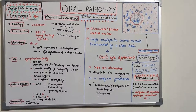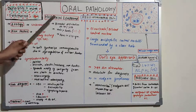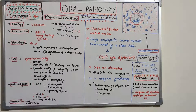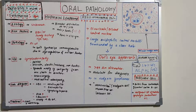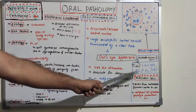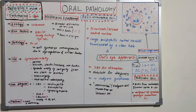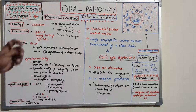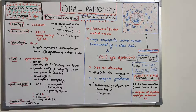Hello everyone, welcome back to another session on dentistry and more. Today's topic is Hodgkin's lymphoma and oral pathology. We are moving on to a new subject — oral pathology — and today's video covers Hodgkin's lymphoma, a commonly asked question for university exams. We'll also study the Reed-Steinberg cell and the popcorn cell, both present in Hodgkin's lymphoma.